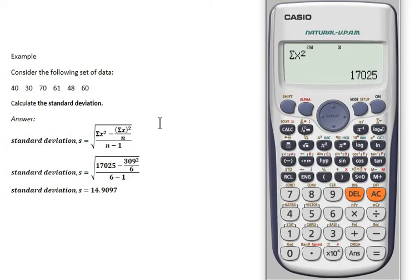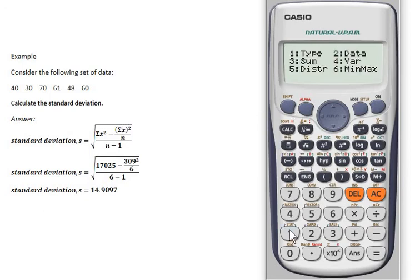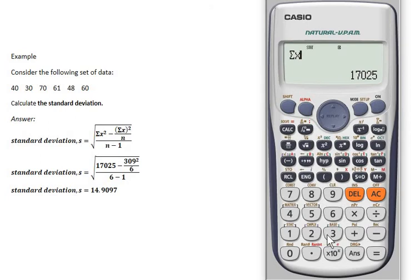Next, for summation of x, press Shift, press number 1, choose number 3, and choose number 2 for summation of x. Press equal to get the value. The summation of x is equal to 390.